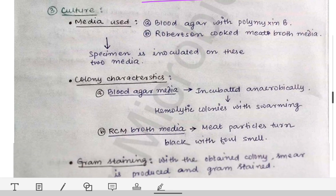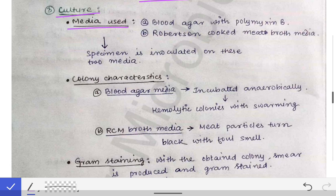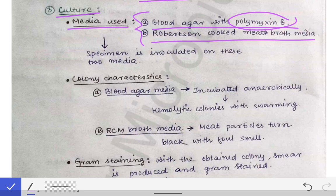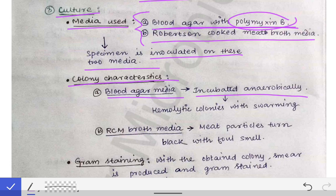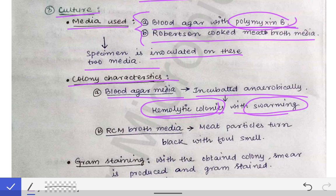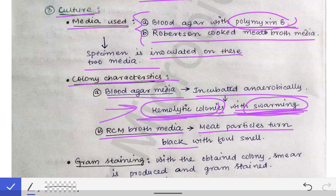For confirmation we do culture using two media: blood agar with polymyxin B (an antibiotic) and Robertson's Cooked Meat broth. Both are inoculated with exudate and necrotic tissue and incubated anaerobically. On blood agar incubated anaerobically, we see hemolytic colonies with swarming — the hemolysis is due to the tetanolysin exotoxin. Swarming is an important characteristic feature of Clostridium tetani.